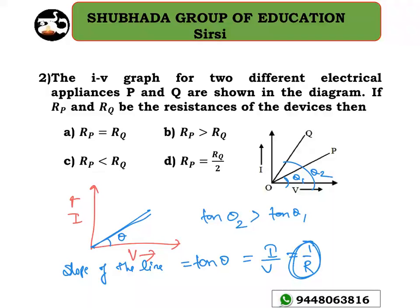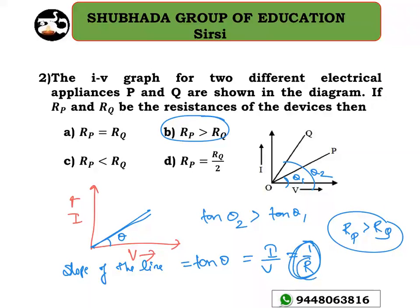From this we can clearly conclude that Rp is greater than Rq. The slope of the line is inversely proportional to the resistance of the appliance. Therefore option B is the correct answer for this question.